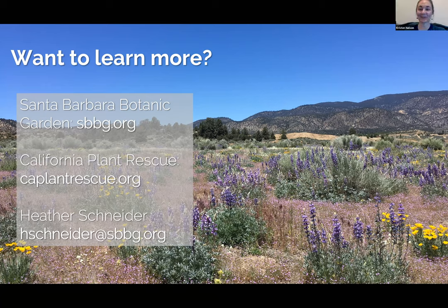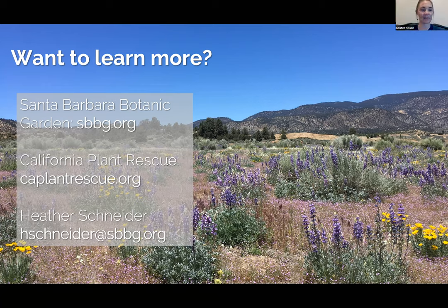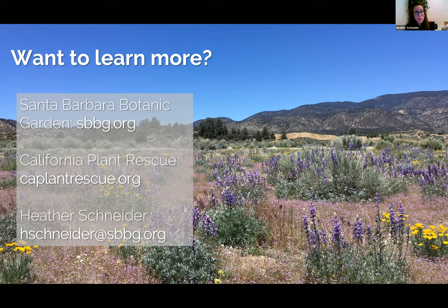Next question: can Phytophthora be identified at the seed level, and how do you differentiate from other pathogens? I'm not a Phytophthora expert and I don't know — I would imagine that if it was contaminating seeds you could identify it, but I really haven't done it. Next: what is the oldest germinated California native seed? That's a great question and a hard one — a lot of people have been saving seeds of California natives outside of seed banks. The California Botanic Garden, previously Rancho Santa Ana, has the biggest seed bank in California with a collection that goes back a long way. Our oldest collection is Napoma Lupin from 1985.